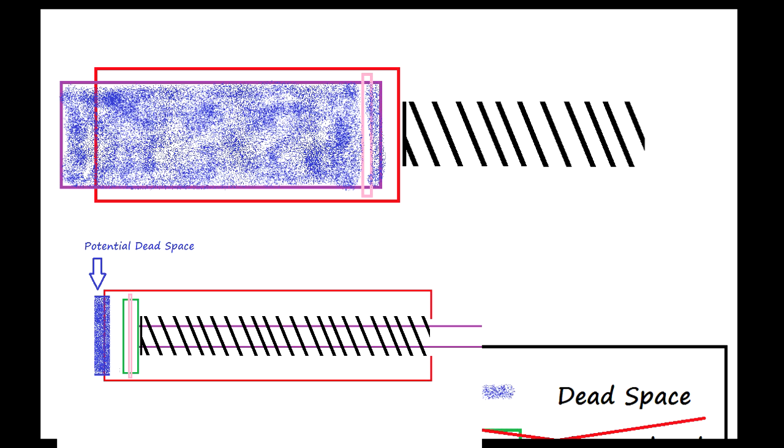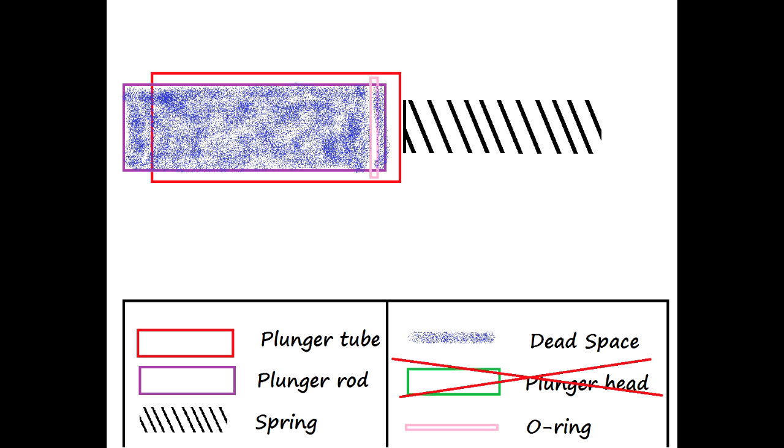Dead space is nearly impossible to avoid completely, but the reverse plunger tube system uses significantly more than the direct plunger tube system. The increased dead space of the reverse plunger tube system is the primary reason modders don't like this system.